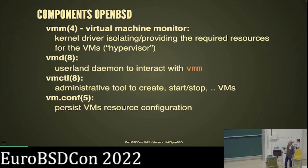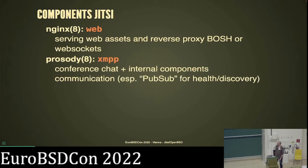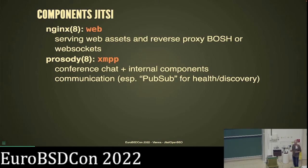We have the kernel components, the userland daemon for VMCTL and its configuration. On the Jitsi side, we have four components at play to run a basic conference. You can add more for more complicated features, but just to have a simple video conference with built-in chat, raise hand, and screen sharing, four components are totally enough.